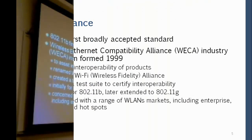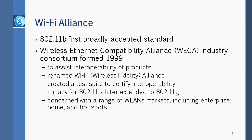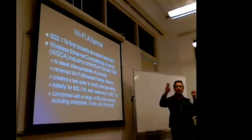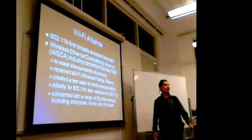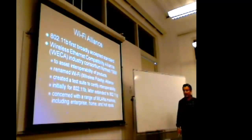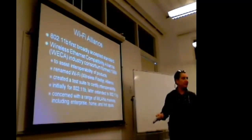When 802.11b was first accepted, the Wireless Internet Compatibility Alliance — WECA — was formed. To assist in interoperability of products, WECA was renamed Wi-Fi, which stands for Wireless Fidelity Alliance. They created a test suite to satisfy interoperability, initially for 802.11b and later extended to 802.11g. Their main concern is the range of WLAN markets including enterprises, homes, and hospitals. When a product is Wi-Fi approved, that means it meets the standard.